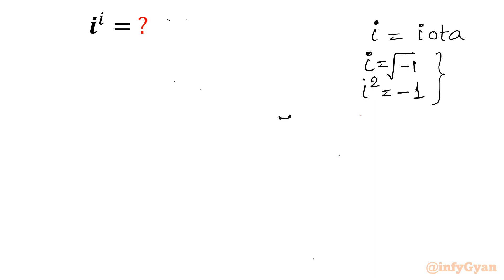So for any complex number z, I can write in the form of e^(iθ) or e^(ix). So I can write cos x plus i sin x. This is our Euler's identity.